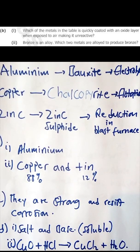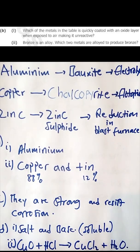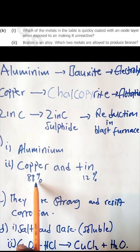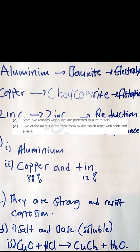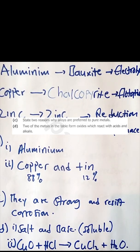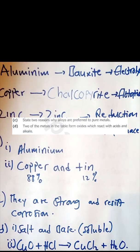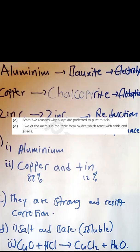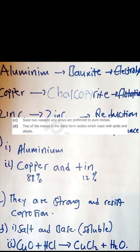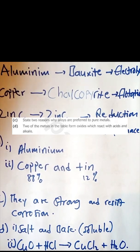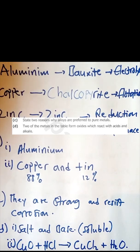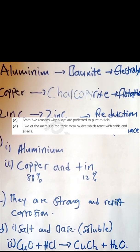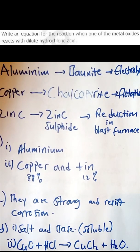Question 2b: bronze is an alloy — which metals are alloyed to produce bronze? Bronze is made from copper and tin, specifically about 88% copper and 12% tin. Question c: state two reasons why alloys are preferred to pure metals. Most alloys are strong and they resist corrosion, unlike pure metals.